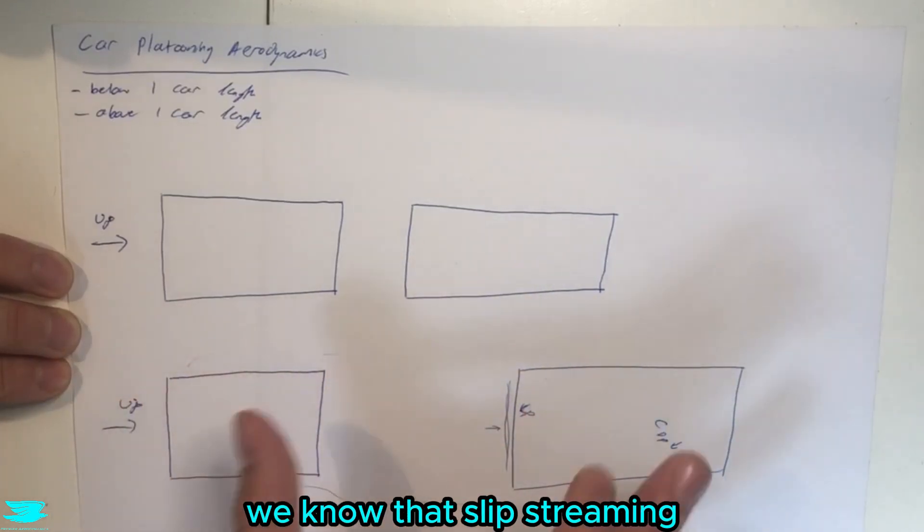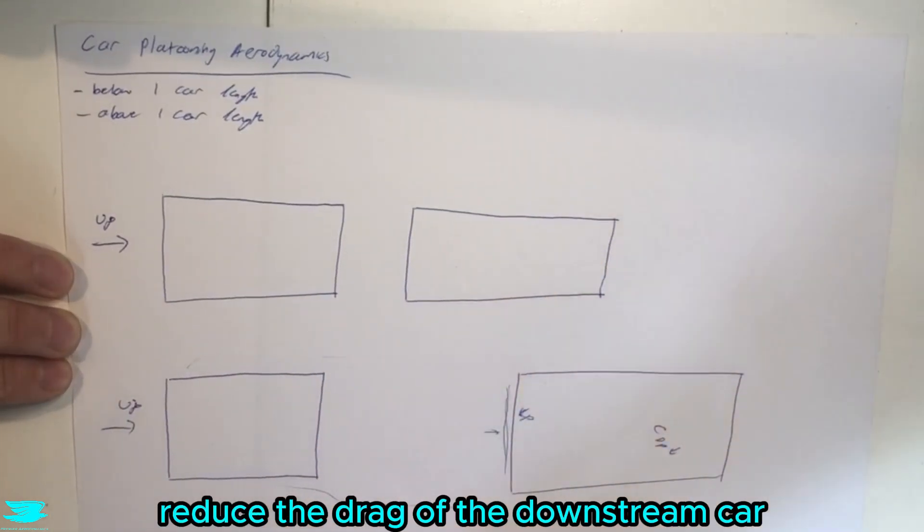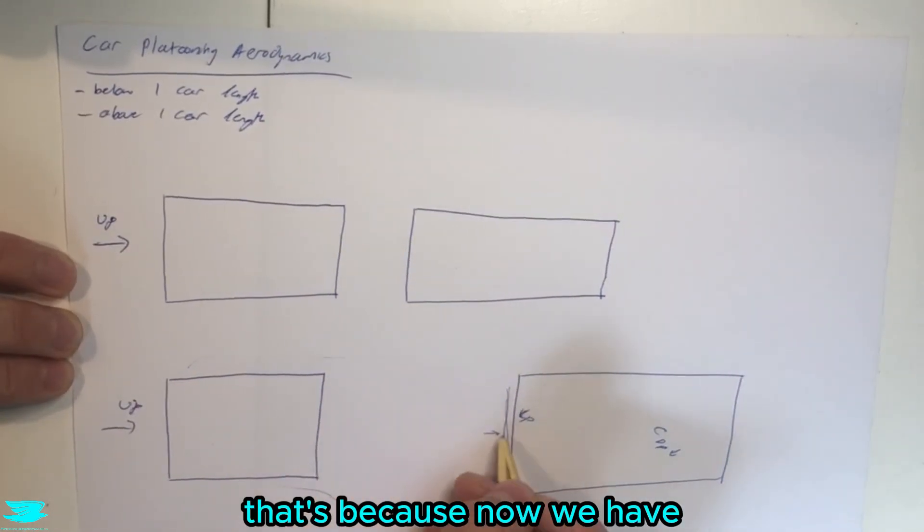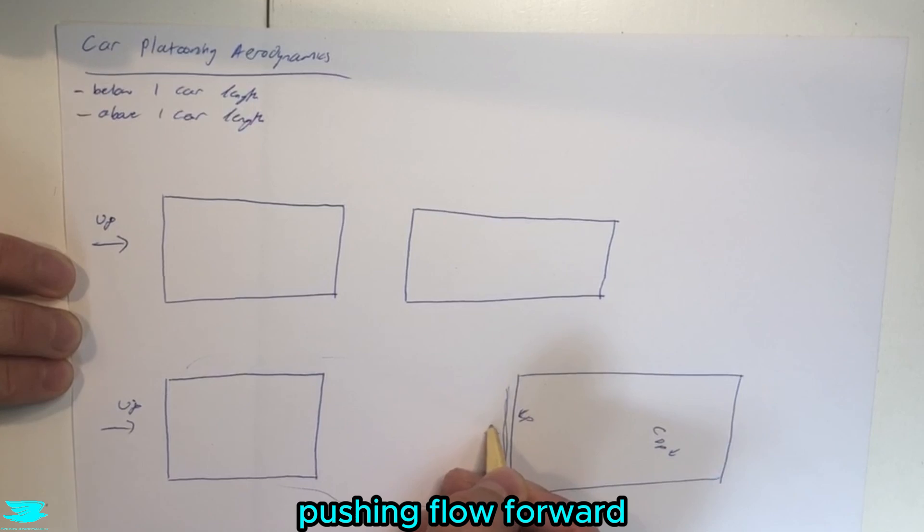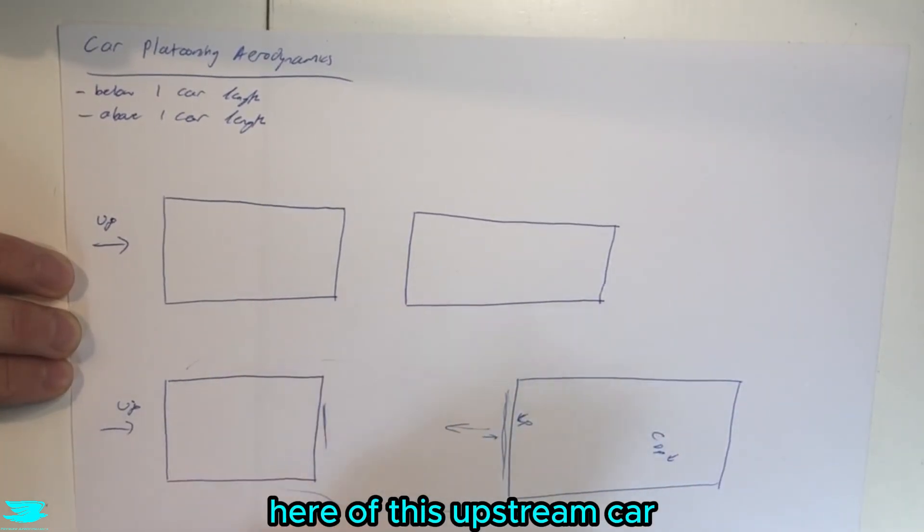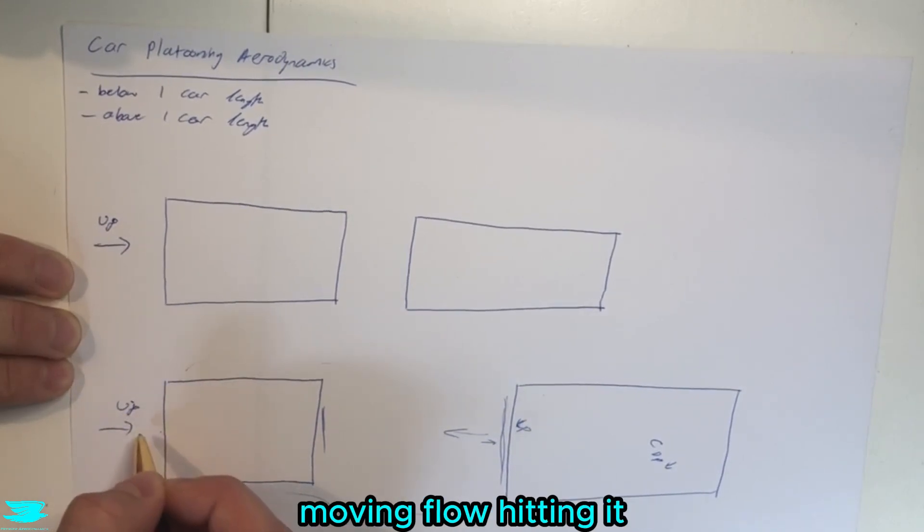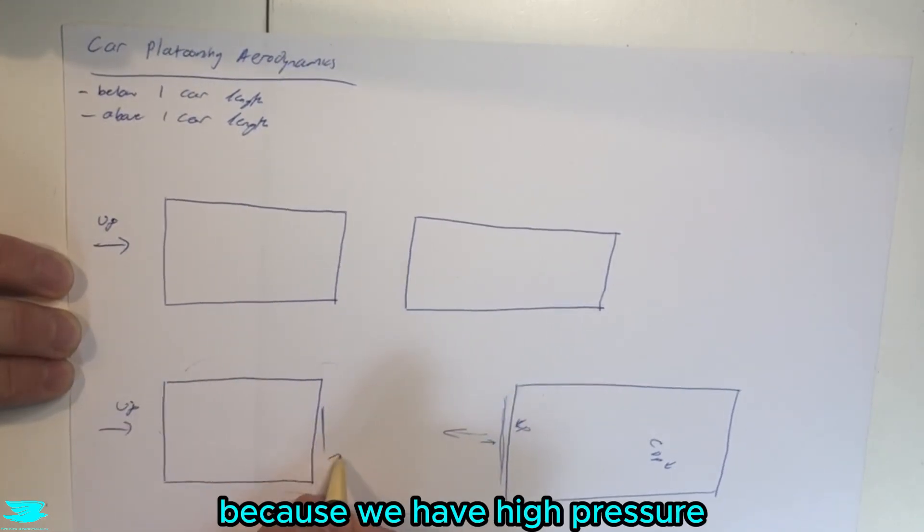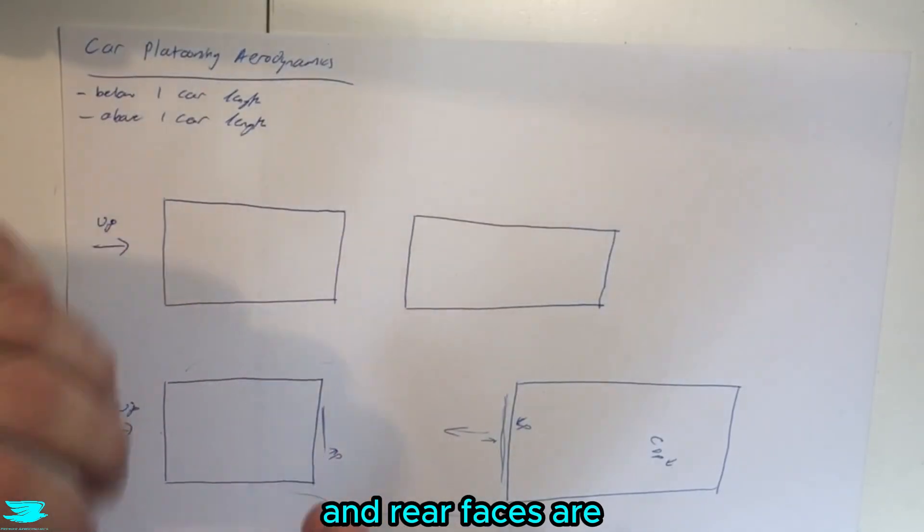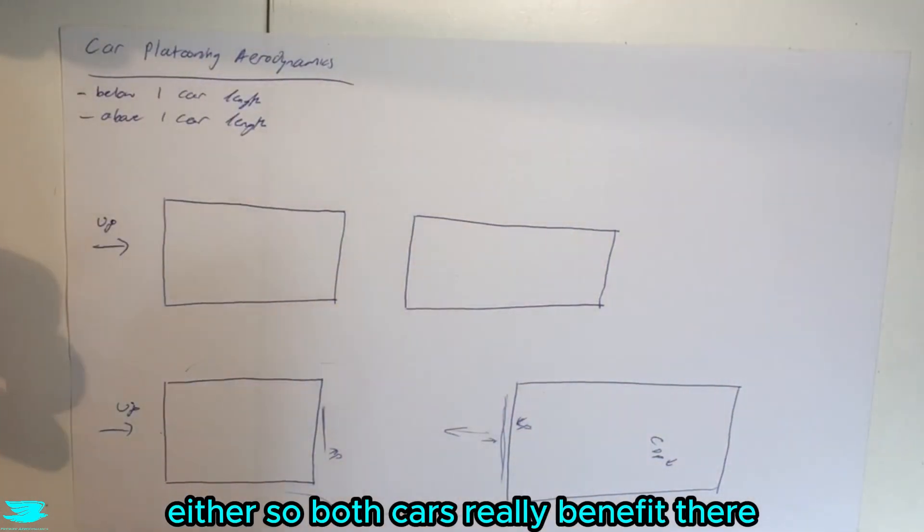So that's all well and good. We know that slipstreaming generally will reduce the drag of the downstream car, and also will often reduce the drag of the upstream car as well. That's because now we have this upstream car, this downstream car, pushing flow forward and creating a slightly higher pressure on the back here of this upstream car. So even though we have quite high pressure at the front still, because we have very fast moving flow hitting it, now because we have high pressure up around here as well, the pressure difference between the front and rear faces are not as great. That means that the pressure drag is not as great either. So both cars really benefit there.